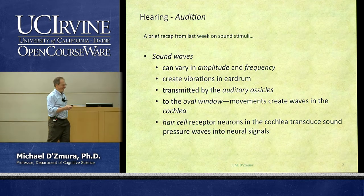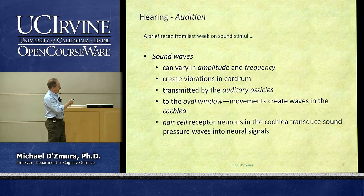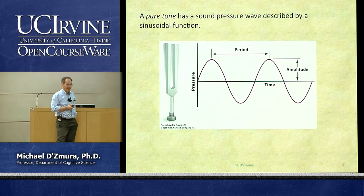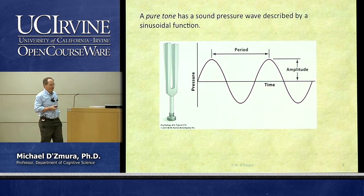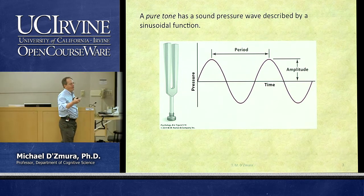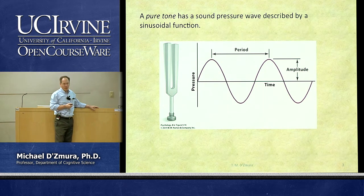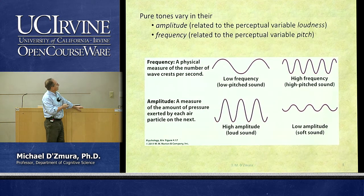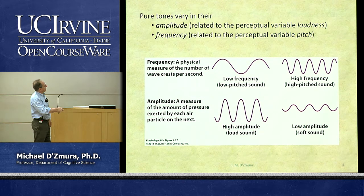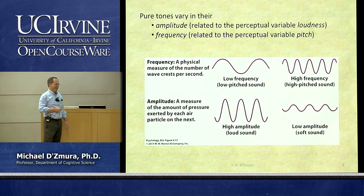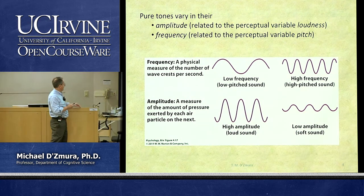Here is a pure tone sinusoidal wave. You can see it has a regular up and down. The period is the duration between successive peaks — effectively how long it takes one full wave to be created, another word for that being wavelength. The amplitude is simply how much of it we've got. We can vary both the frequency — low and high frequencies — and the amplitude. Low frequencies typically sound like low notes; higher frequencies typically sound like high notes. Loud and soft are the corresponding perceptual correlates of amplitude.